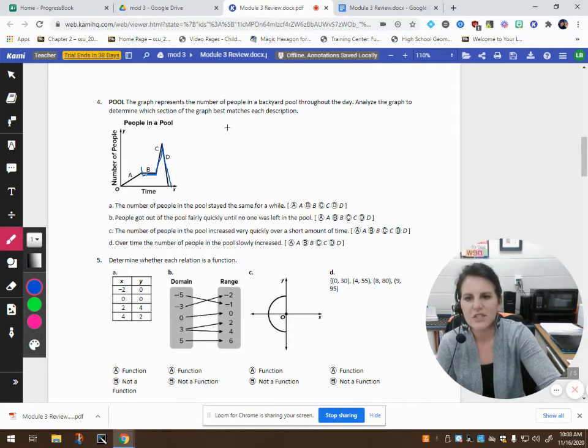So, it says, analyze the graph to determine which section best matches. It says, the number of people in the pool stayed the same for a while. That would have to be right here because the number of people is not going up here. So, this would be part B. People got out of the pool fairly quickly until no one was left. That's here. All the people are getting out of the pool. The number of people in the pool increased very quickly. That would be right here. And, the number of people in the pool slowly increased. We're increasing at a steady rate over A. So, that's that part.